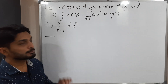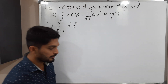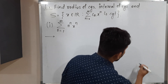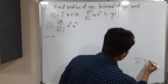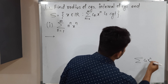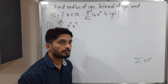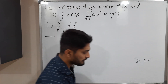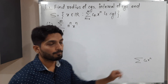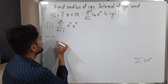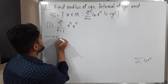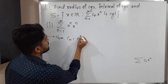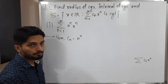This is our first power series. The standard form of a power series is summation Cn x raised to n. We can compare the given power series with its standard form and we get Cn. What is our Cn? Cn is n raised to n.